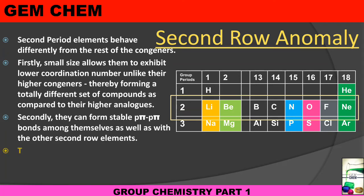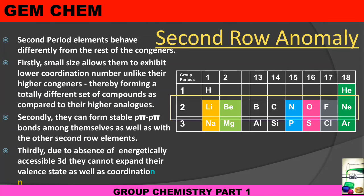These were the three reasons why there is a second row anomaly - why lithium, beryllium, boron, carbon, nitrogen, oxygen, and fluorine show differences in properties with their respective higher analogs. This was it for today. In the next video, we